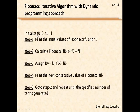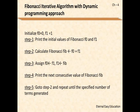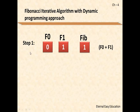Step 1: initialize f(0) = 0, f(1) = 1. Then fib = f(0) + f(1) = 0 + 1 = 1. Now interchange the values: f(1) is given to f(0), and fib is given to f(1). This process is repeated — if the Fibonacci series is for n = 5, we will get 5 digits in the series; if n = 8, we get 8 numbers.